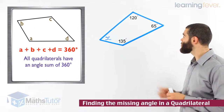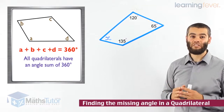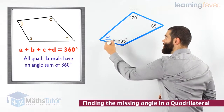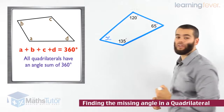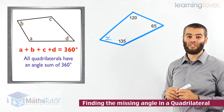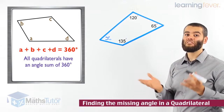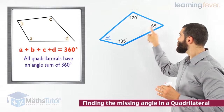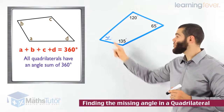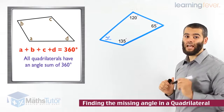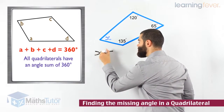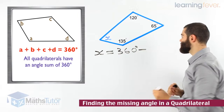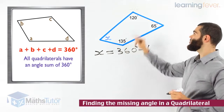We're now going to use the angle sum of a quadrilateral to find the missing angle in this four-sided shape. We look carefully and notice that X is missing — this angle is not available. We know this is 135 degrees, this is 65 degrees, and this is 120 degrees. Altogether we know they add up to 360 degrees, so we can work out the missing angle by taking away all the other angles from 360. X equals 360 minus 135, minus 65, minus 120.